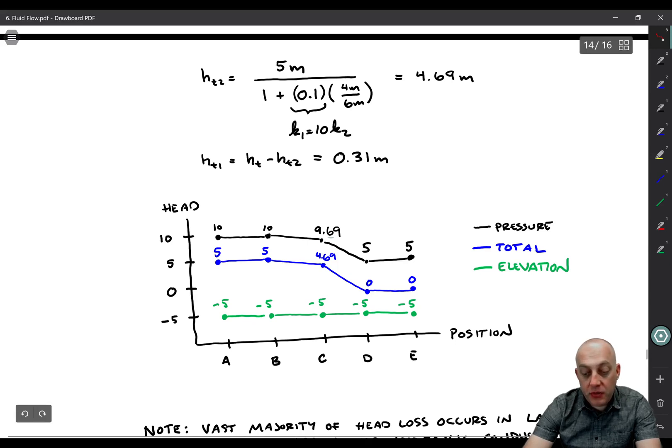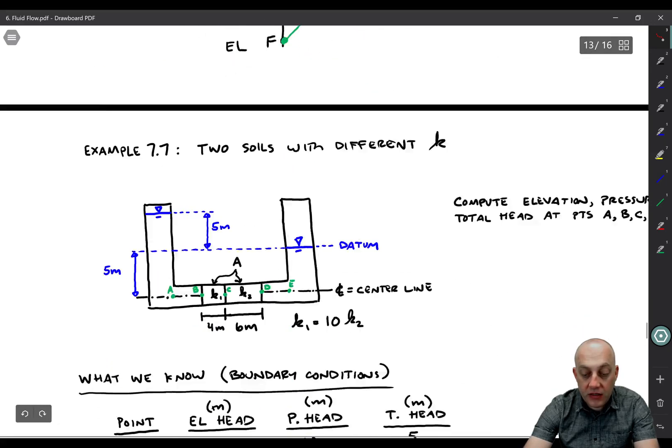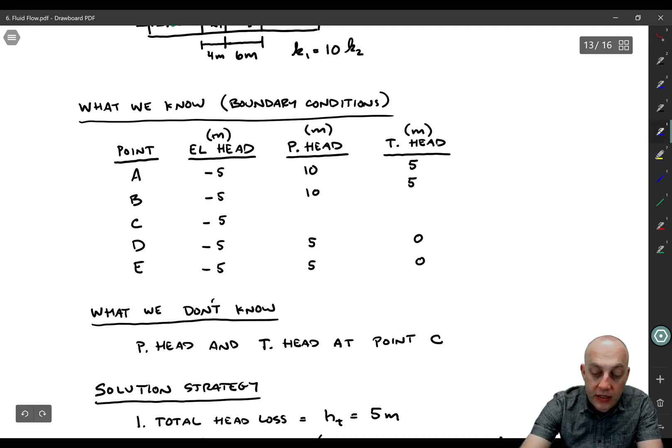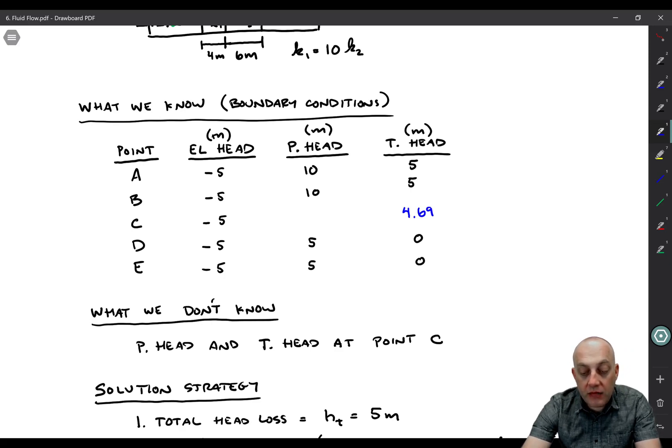Now all we need to do is solve for the pressure head. We already had these pressure head points at A, B, D, and E. Now to get the final pressure head point, you would do the total head minus the elevation head. So 4.69 minus negative 5 and you get 9.69 up there. So there's our diagram of how to get these points. And we can come up here now and write them into our table.